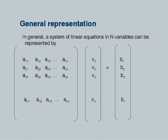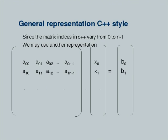A system of linear equations in N variables can be represented by a matrix notation. In standard math notation, indices run from A[1][1] to A[N][N]. However, in C++, since all arrays start their index from 0 and go up to N-1, we use a modified representation. The coefficient matrix runs from A[0][0] to A[N-1][N-1], variables from X[0] to X[N-1], and the right-hand side from B[0] to B[N-1]. That is the only difference to remember.